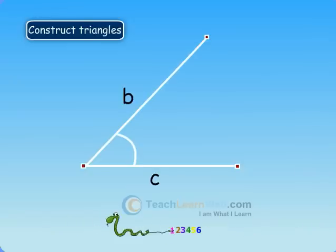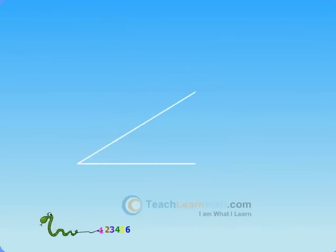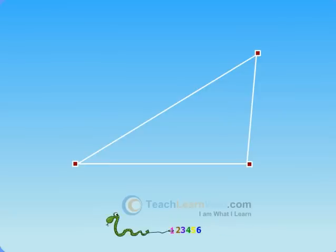Using the common angle alpha, finally connect the two end points. Let us consider the following example to draw a triangle under ASA congruency.